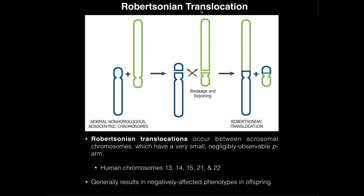The non-disjunction event just described is the most common cause of Down syndrome. But there's another cause called a Robertsonian translocation. The vast majority of cases of Down syndrome in offspring are due to non-disjunction events that occur prior to fertilization. However, a minor but still clinically relevant cause of Down syndrome — and other diseases — is the Robertsonian translocation.